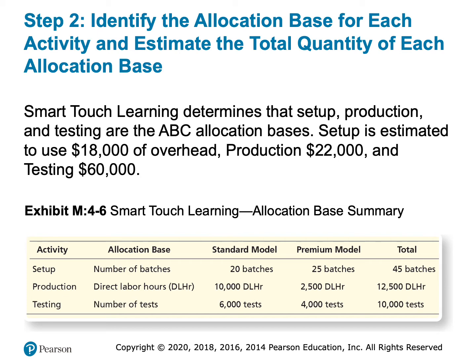For the setup rate, setup is $18,000 divided by 45 batches. Production is using $22,000 divided by the total of 12,500 direct labor hours. And testing is using $60,000 divided by the total of 10,000 tests. So we're going to compute a rate per activity. If you want to go ahead and pause this video, try computing these rates yourself, and then check yourself on the next slide.